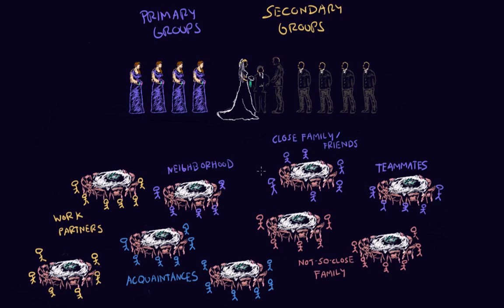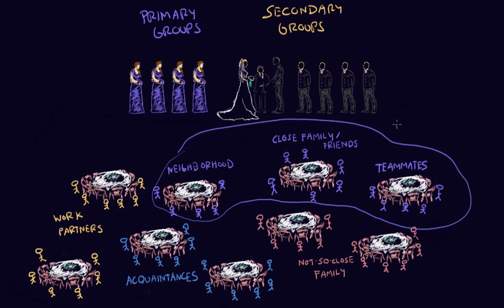Let's say the bride grew up in a really great neighborhood and was friends with everyone on her street. Everyone grew up together, hung out on the weekends, and would often take trips to the beach and have cookouts as a neighborhood community. This is an example of her primary group. So the neighborhood friends, the close family, and the teammates are all examples of primary groups within the bride and groom's lives.